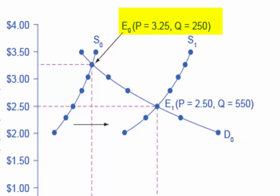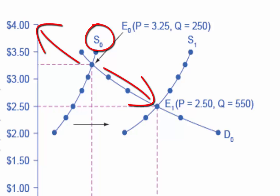The original equilibrium price is $3.25 and the original equilibrium quantity is 250. Next, we need to determine if the good weather is affecting supply or demand — which does the factor shift? In this case, the factor is shifting supply. Now that we know supply is being shifted, we need to determine in which way the supply is being shifted. In this case, the supply is being shifted to the right.